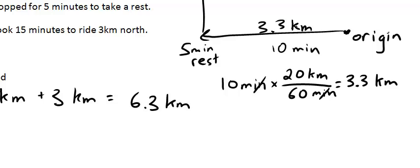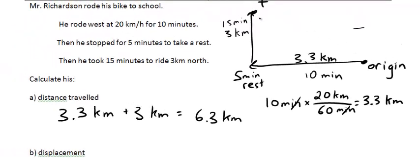Now let's look at the displacement. Remember, displacement is the change in position. So he started here at the origin and finished here. So his displacement is this distance here. So here we have a right triangle. We're going to use some Pythagorean theorem to calculate his displacement.